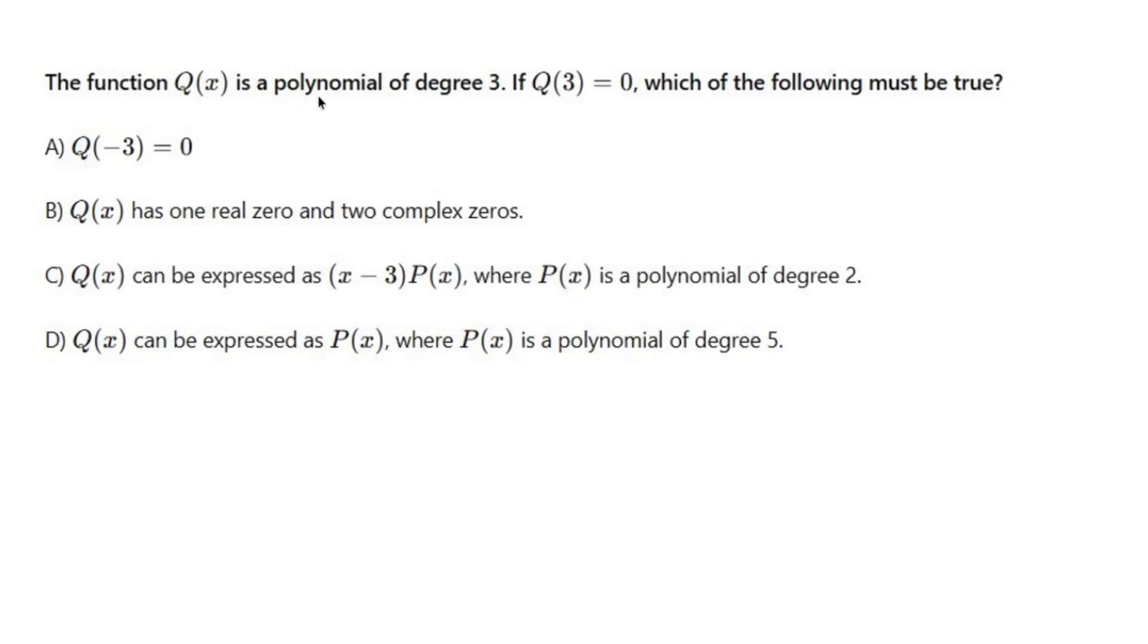The function Q(x) is a polynomial of degree three. If Q(3) equals zero, that means if I plug in three, which of the following must be true?